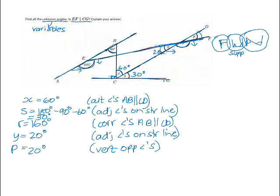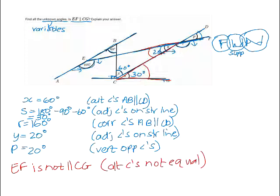S and Y are actually alternate angles between the lines EF and CG. Can you see that there is a Z shape there? But they are not equal. That's 20 degrees, and that's 30 degrees. So that immediately tells us that EF is not parallel to CG, and the reason for that is because the alternate angles are not equal. So we can see that those lines can't be parallel. If they were equal, then we would be able to conclude that the lines are parallel.